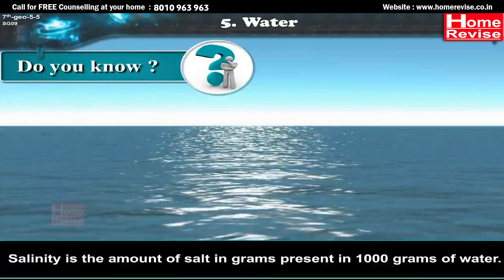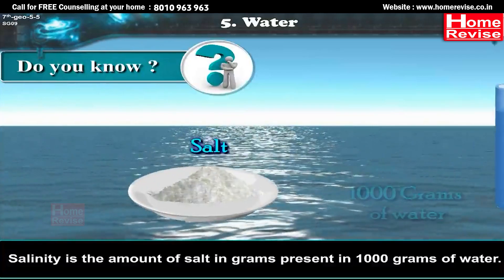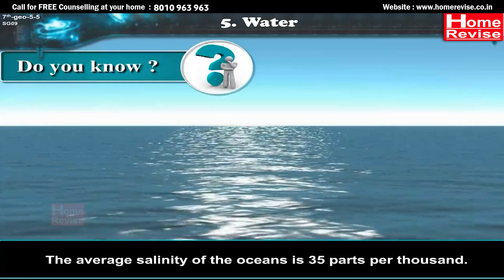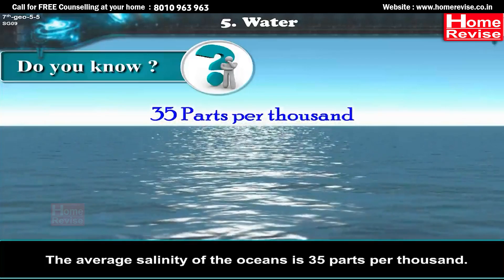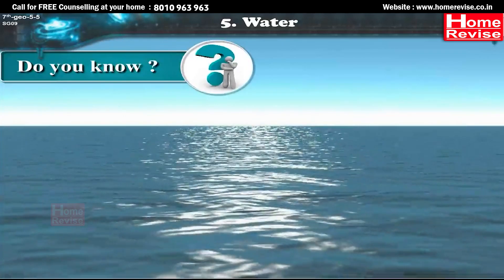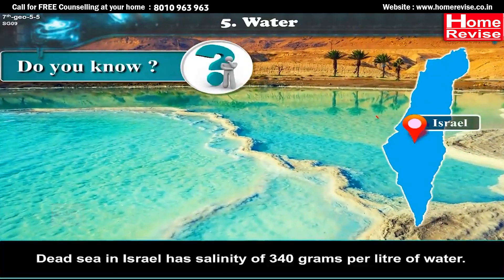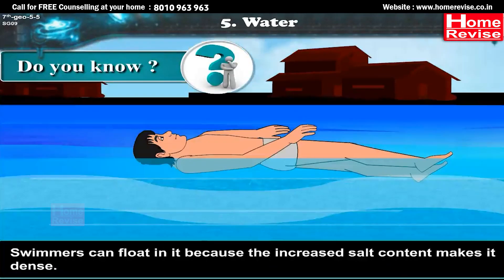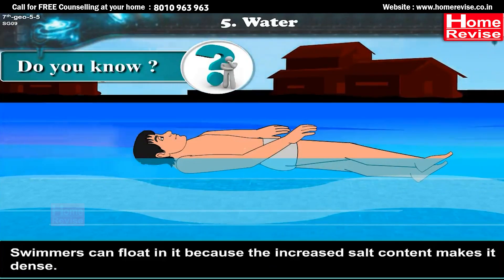Salinity is the amount of salt in grams present in 1,000 grams of water. The average salinity of the oceans is 35 parts per thousand. Did you know? The Dead Sea in Israel has a salinity of 340 grams per liter of water. Swimmers can float in it because the increased salt content makes it dense.